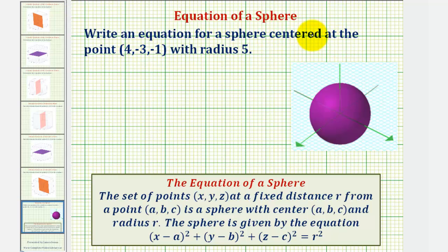Write an equation of a sphere centered at the point (4, -3, 1) with radius 5.